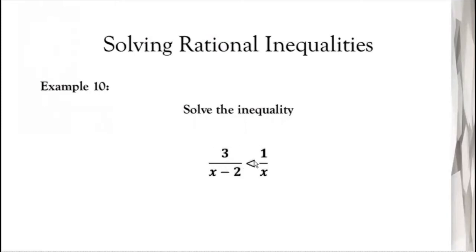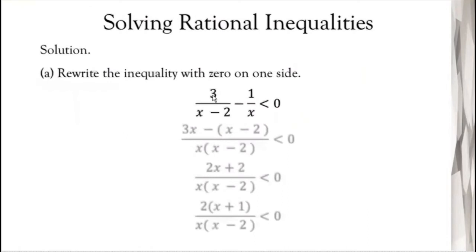What we are going to do is move all terms from the left and right side of the inequality to the left side, then rewrite the inequality with 0 on the right. So we have 3/(x-2) minus 1/x, and the 1/x that was on the right side is now moved to the left, becoming negative 1/x, then equate to 0 in inequality form.